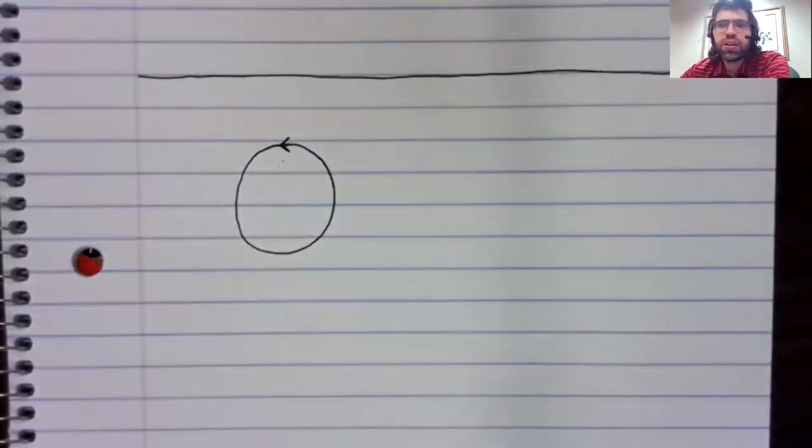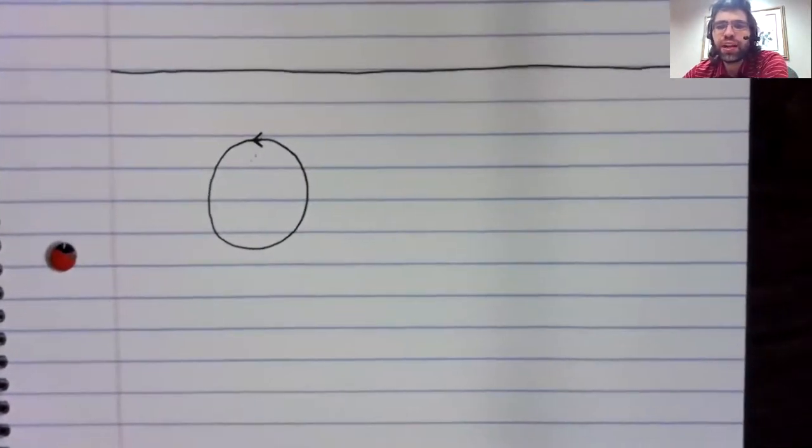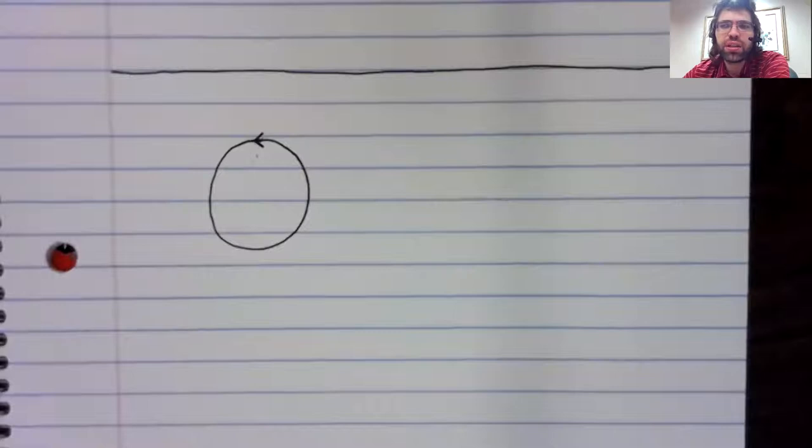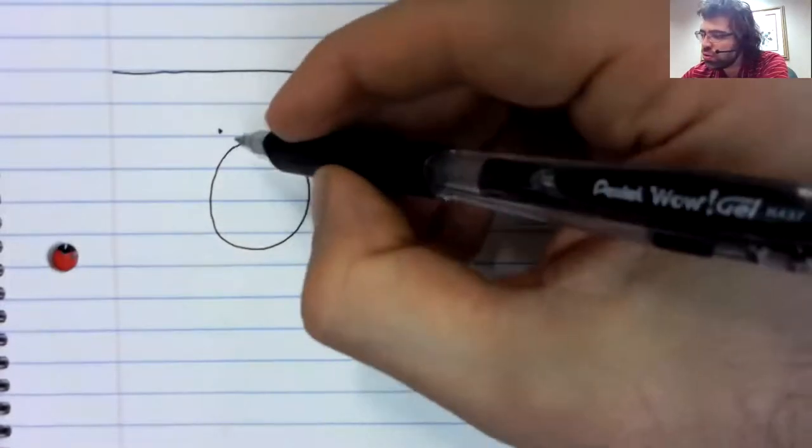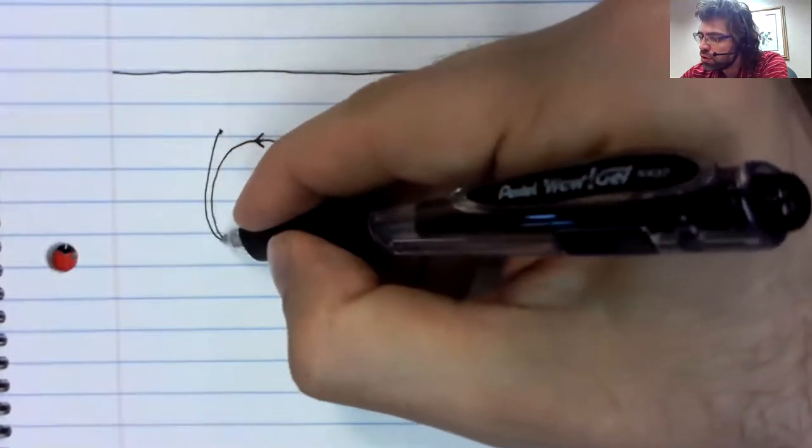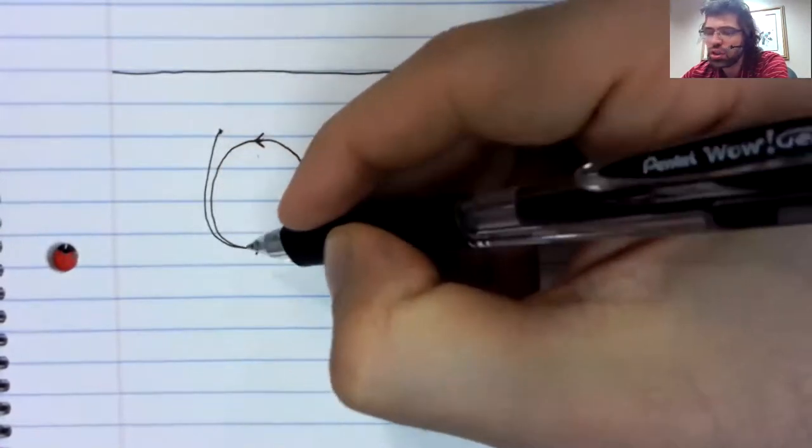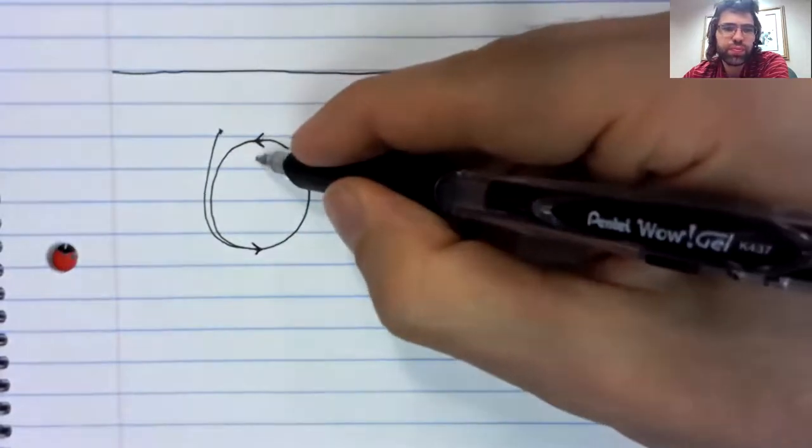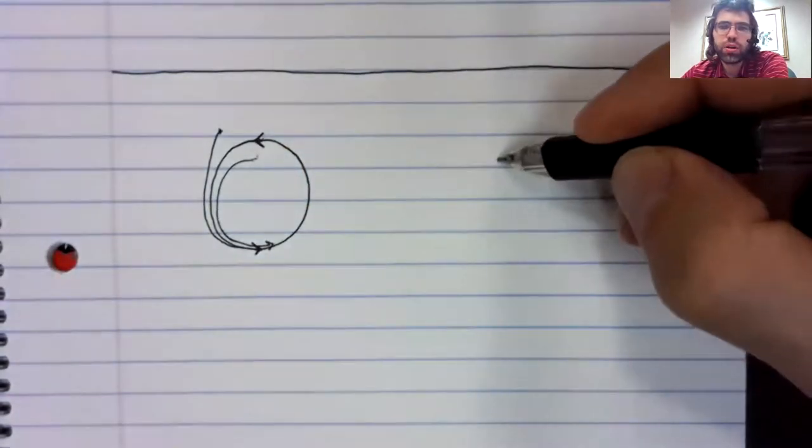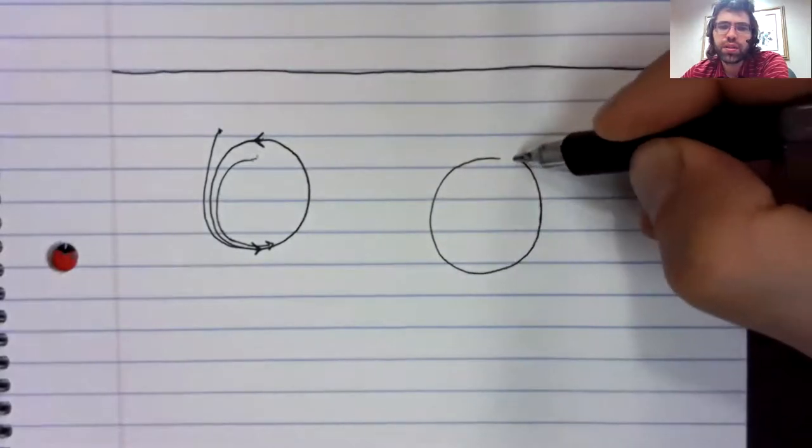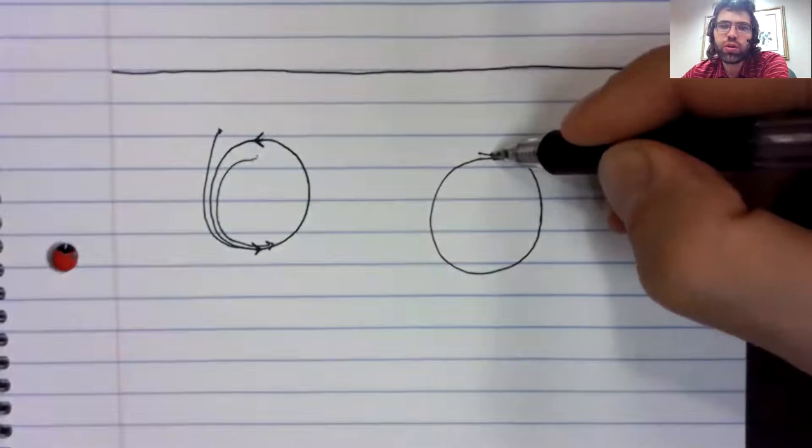And the possibilities are basically the same as we saw with fixed points. We could have stability or instability, and we'll bring back semi-stability as well. So, it could be that if you are pushed off of an orbit, you converge back to the orbit.